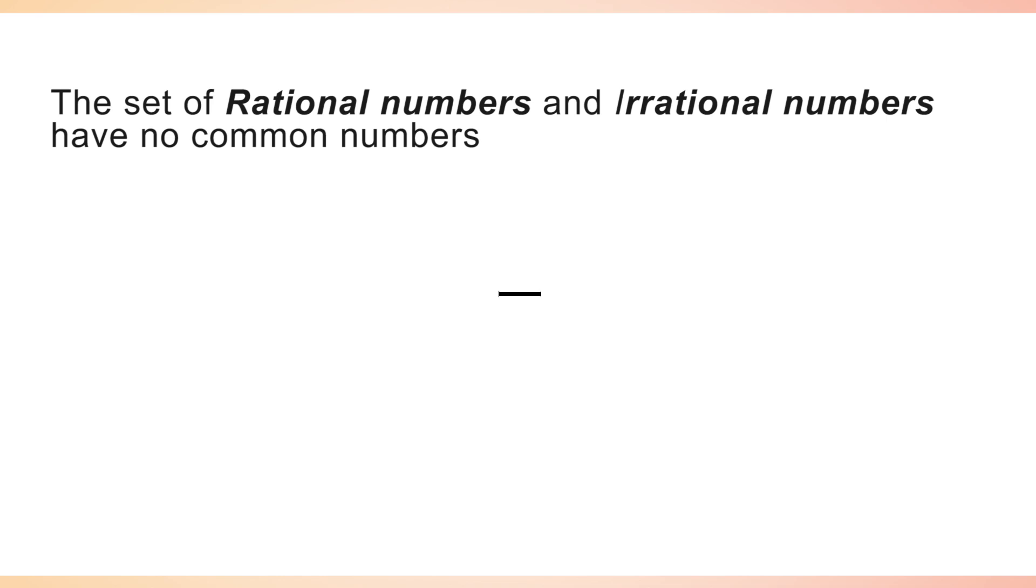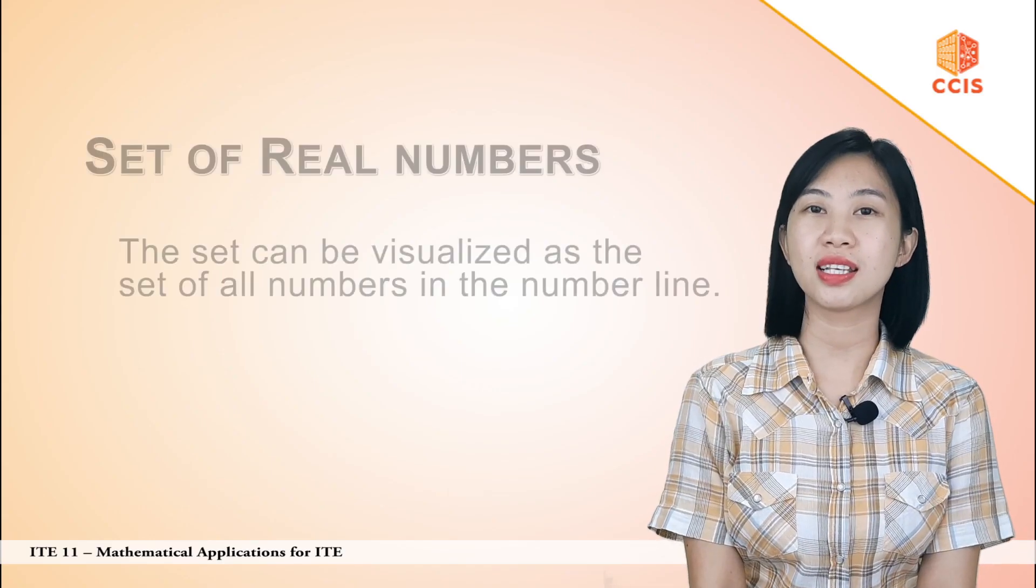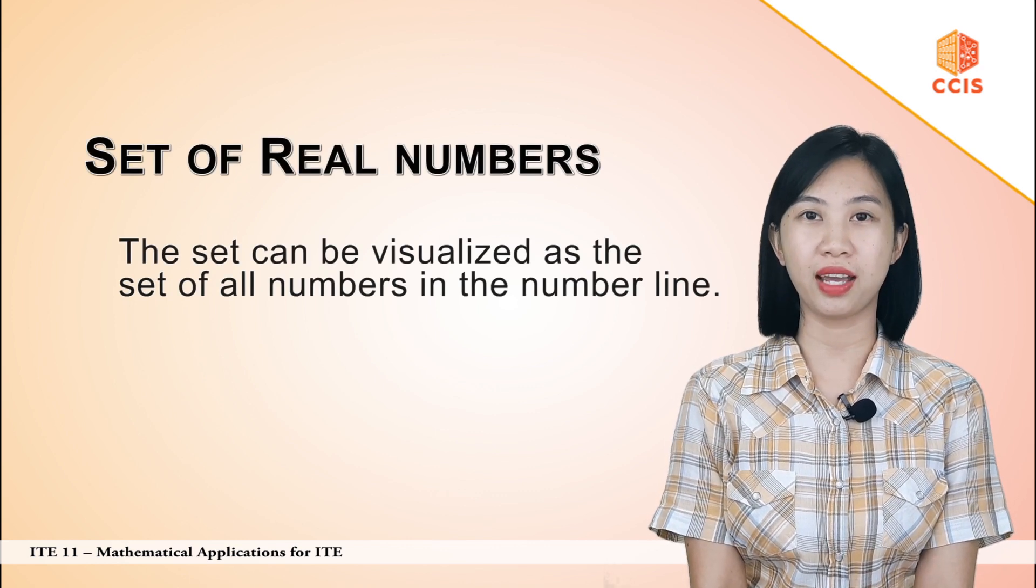The set of rational numbers and irrational numbers have no common numbers. Together, they form the set of real numbers. The set can be visualized as the set of all numbers in the number line.